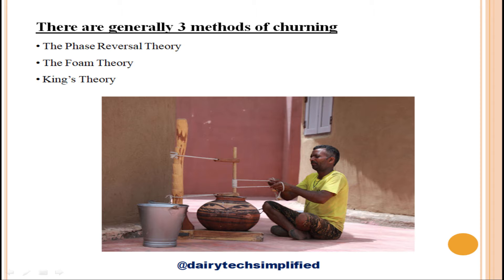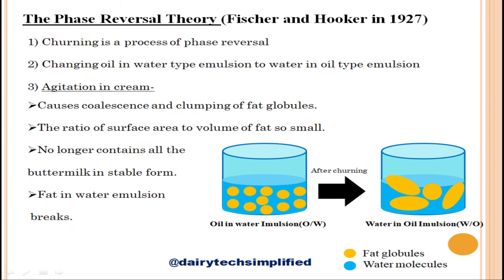The three methods are: number one, the phase reversal theory; number two, the foam theory; and number three, King's theory. The phase reversal theory was proposed by Fisher and Hooker in 1927, and is also referred to as Fisher and Hooker's theory. According to this theory, churning is a phase reversal process — the changing of an oil-in-water type emulsion to a water-in-oil type emulsion. The type of emulsion obtained depends on the proportion of the two main constituents, the order in which they are added, and the type of emulsifier used.